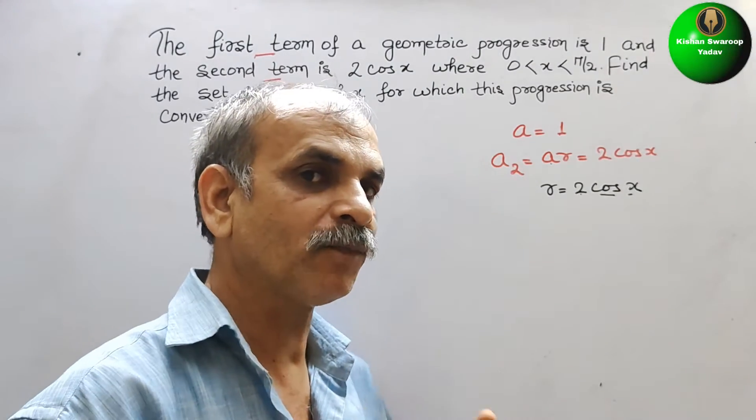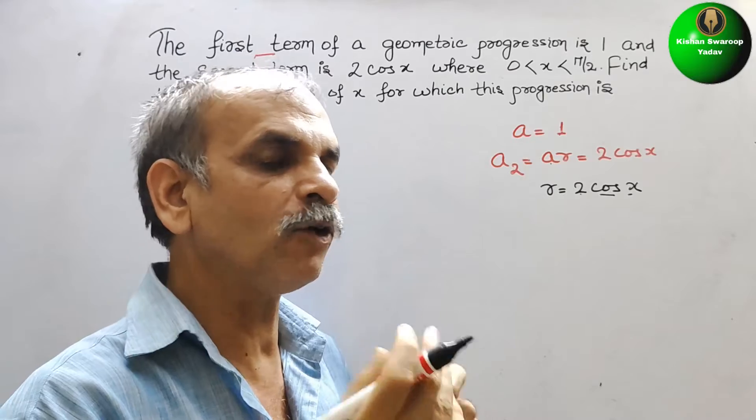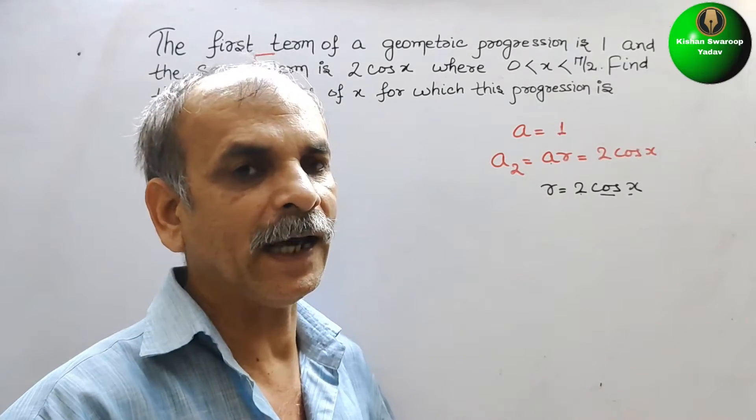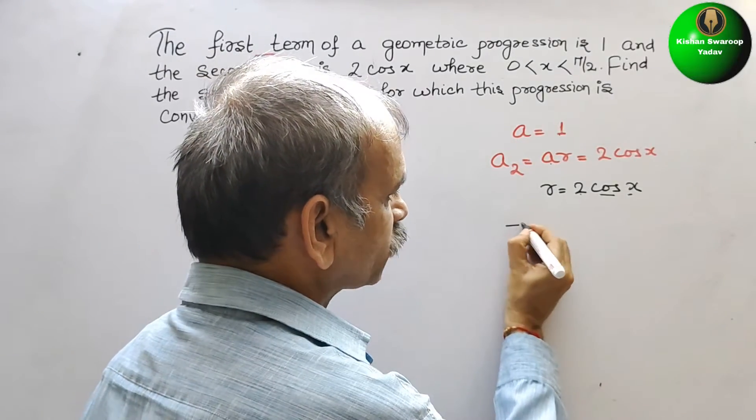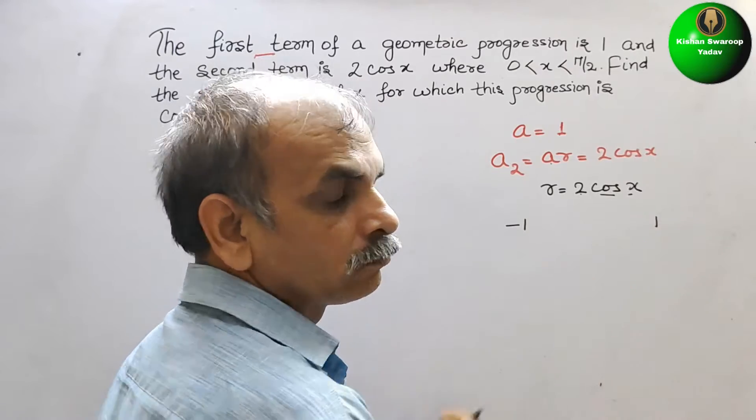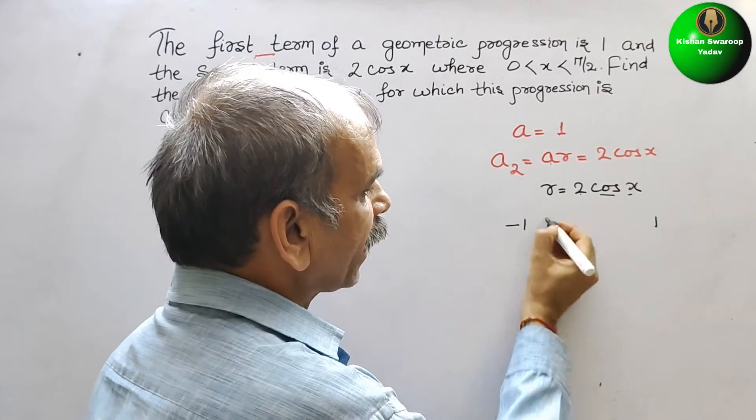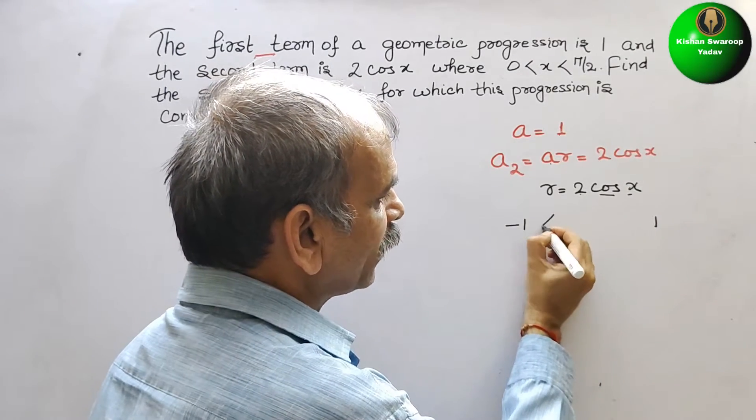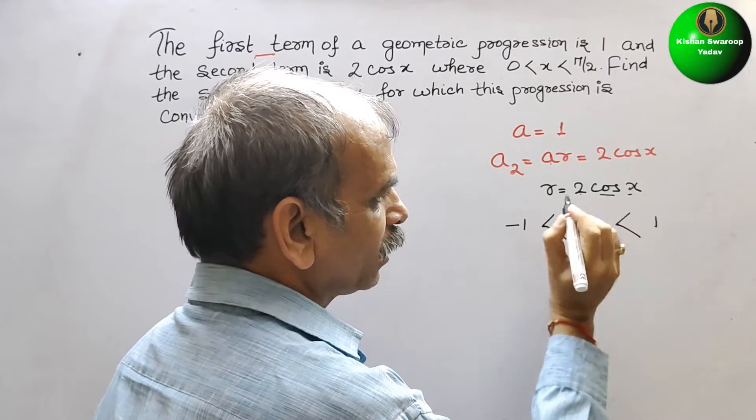But r depends upon the cos value of x. So, that means cos value lies from where to where? It lies from minus 1 to 1. So, here we will write minus 1 less than x less than 1.